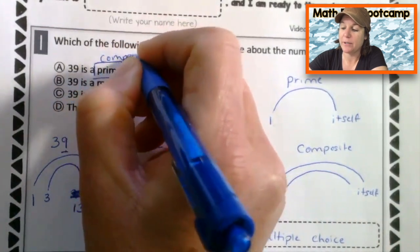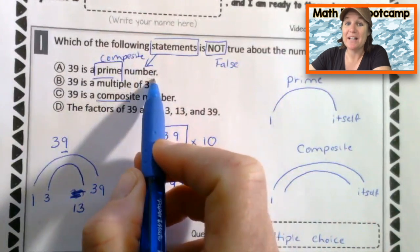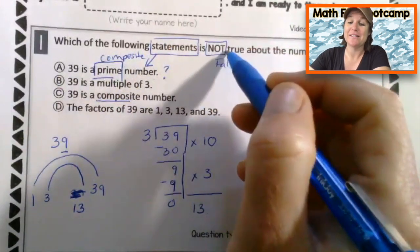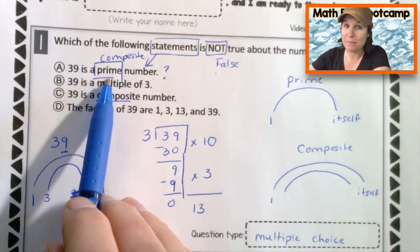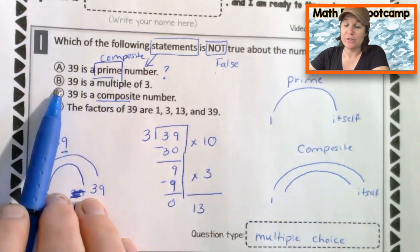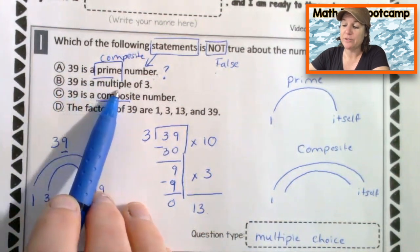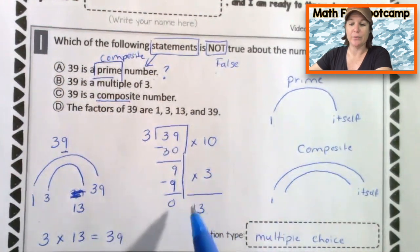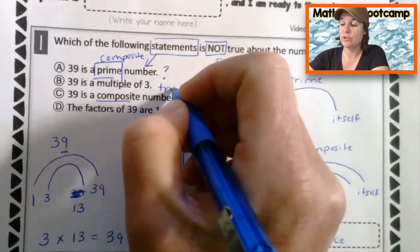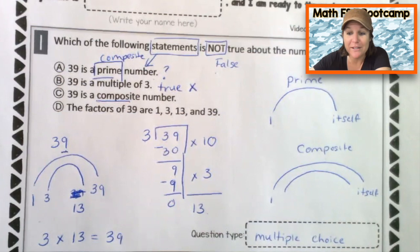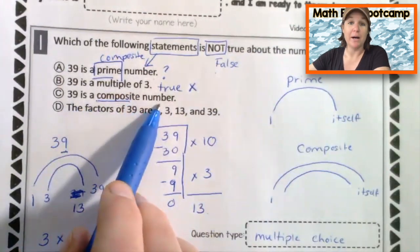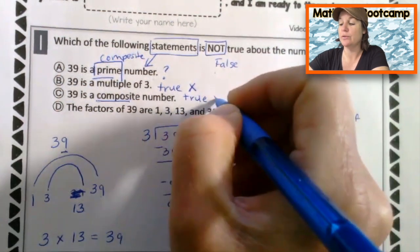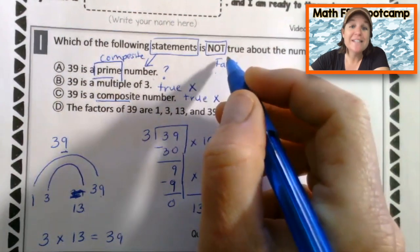So this one is not true. We're trying to look for the one that is not true. We're thinking it's probably going to be this one. Let's look at B. 39 is a multiple of three, which is true because we know that three times 13 will give us 39. So this one is true, which makes it something that we eliminate. 39 is a composite number. Well, we just proved that right here. It had factors of one, three, 13 and 39. So this is true, which means it's not the answer we want. We want the one that is not true, the one that is false.